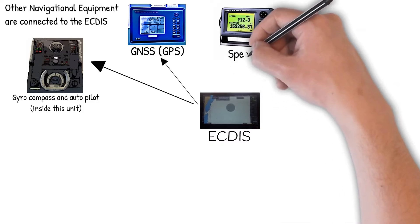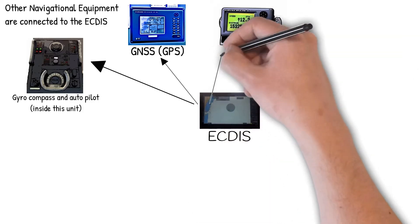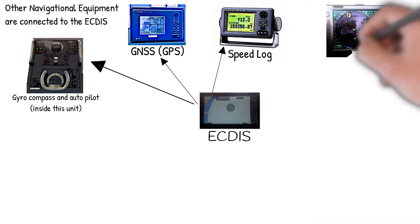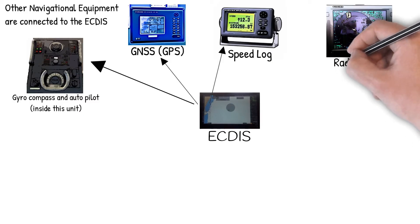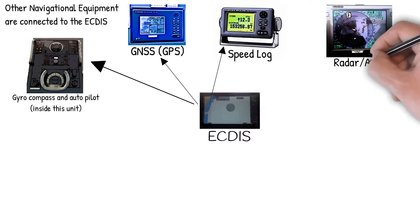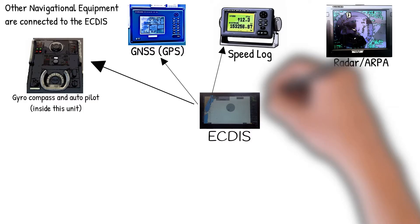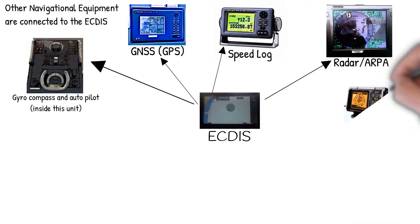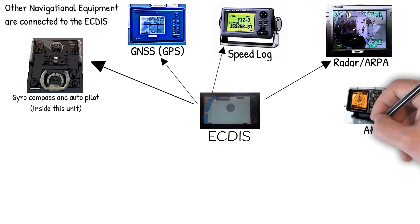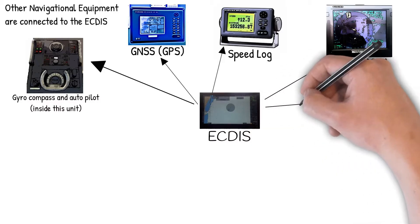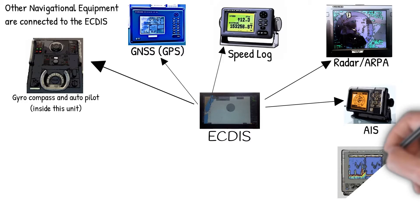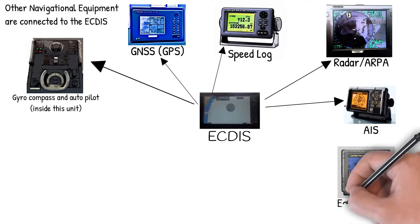Speed Log. Radar ARPA — Automatic Radar Plotting Aid. AIS — Automatic Identification System. Echo Sounder.